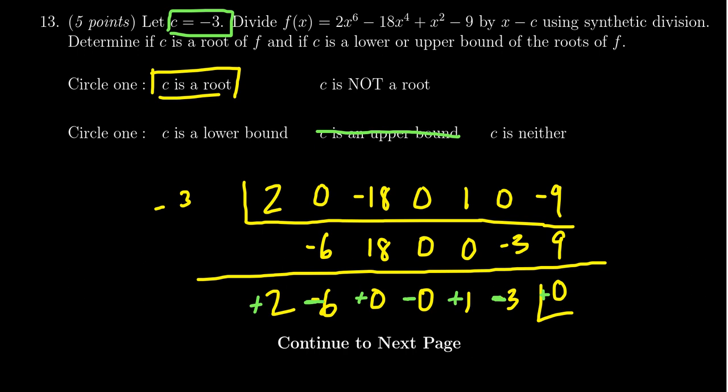Even with the 0s - 0s act as wilds in this case. So since we see that alternating sign each time: positive, negative, positive, negative, positive, negative - that does tell us that c is, in fact, a lower bound. So the correct answer after we've done the synthetic division is that c is a root and it's a lower bound. So any other roots of this polynomial would have to be larger than -3.